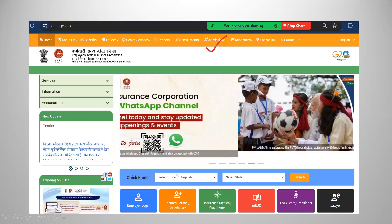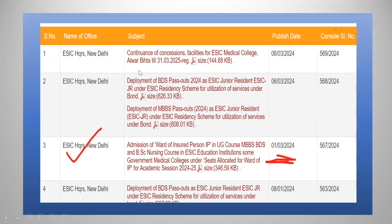Now we should see the official website page. Here you can see so many notifications. You should click on the Admissions tab. Then you can see the notifications regarding the admission process. These are the list of notifications. You can see the recent notification related to MBBS, BDS and BSc Nursing — to utilize this ESIC reservation — dated March 1st, 2024. You click on this notification and you can see one PDF. In that PDF you can read all the details.